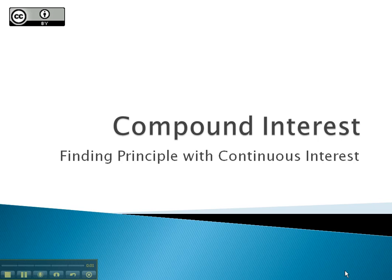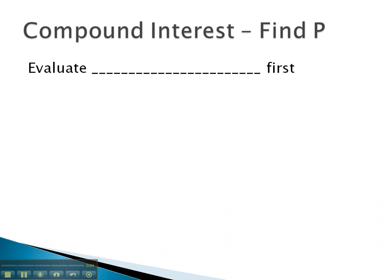In this video, we're going to look at how we can find the principle in a continuous interest problem. When we're looking for a variable, we'll find it's helpful to evaluate what we can first, and then solve for the remaining variable.